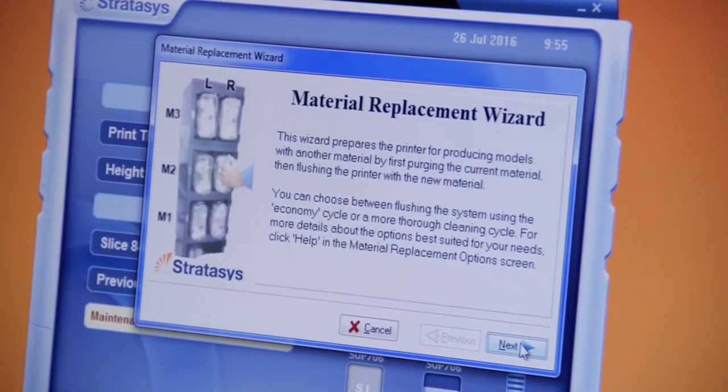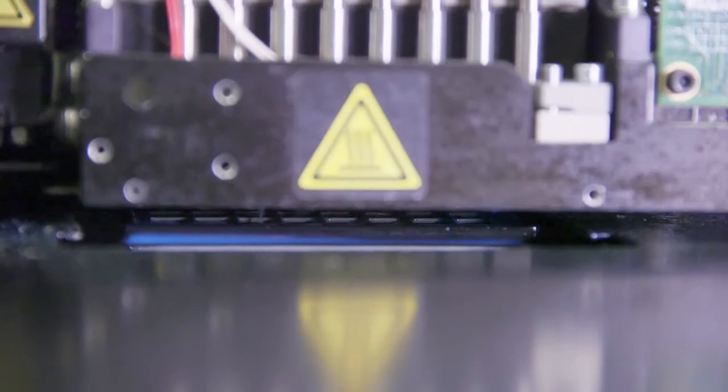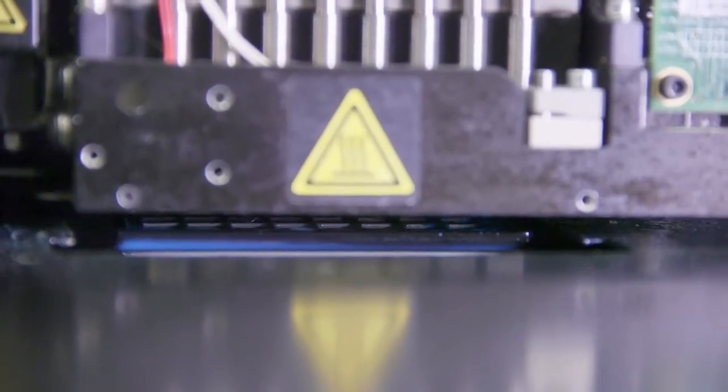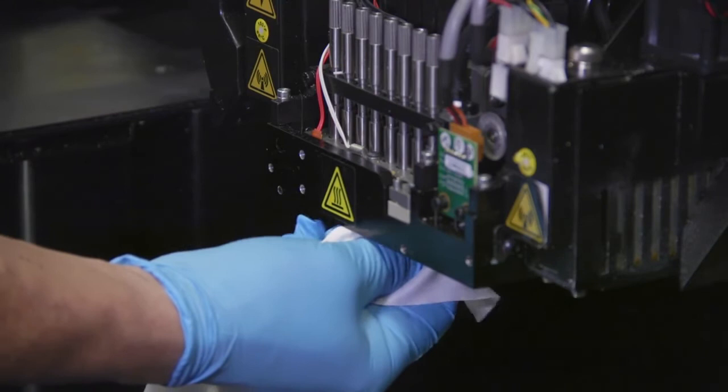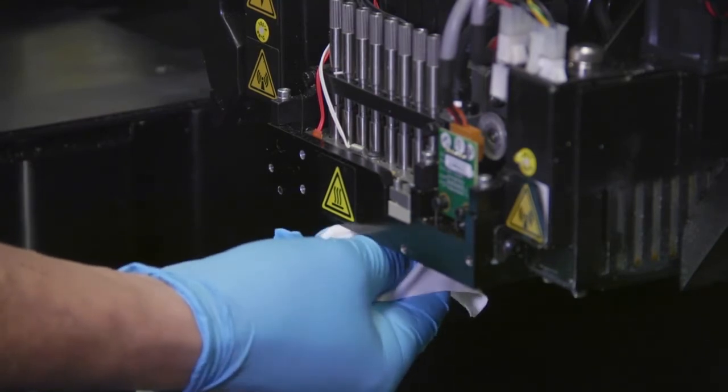Then run the material replacement wizard and select the flushing option appropriate for your printer. Finally, clean the printheads, wiper, and roller waste collector thoroughly.